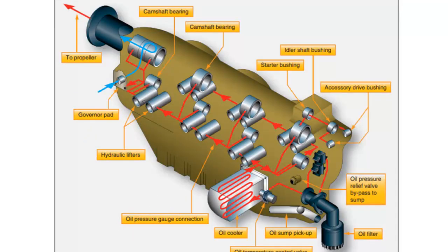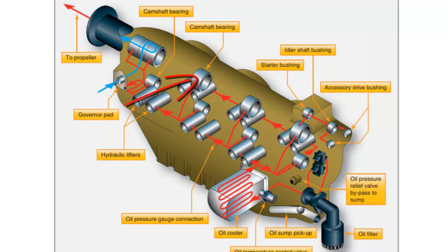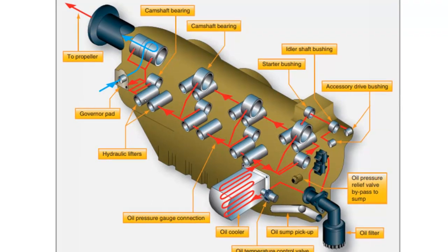Here's a diagram of the various places engine oil goes along the way. You can see it's going through each of the lifters, through the camshaft bearings, through the crankshaft bearings — it's going everywhere in there — making sure those moving parts never really touch.